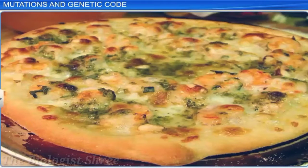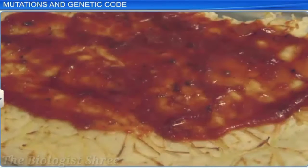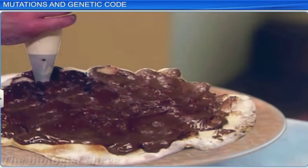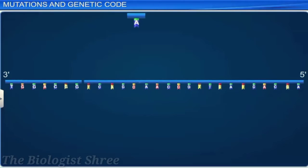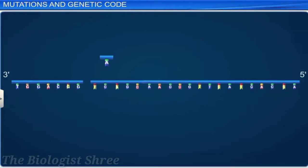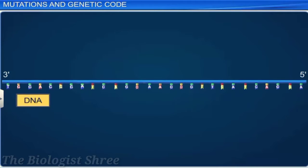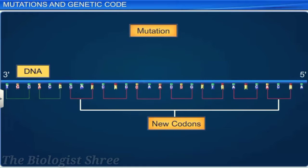Imagine while baking a pizza, you accidentally use chocolate sauce instead of tomato sauce. The end product won't be a pizza, but a new dish. Likewise in your body, if a particular base in your DNA is inserted, deleted, or rearranged, it would result in a mutation, which can be defined as a change in the genetic code, resulting in a loss or gain of a codon.